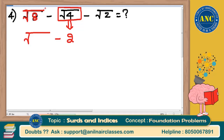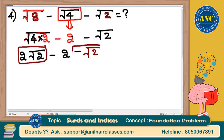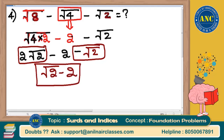8 can be written as 4 into 2. We choose 4 into 2 because 4 is a perfect square — square root of 4 can be taken outside as 2, and root 2 remains inside. So square root of 8 = 2 root 2. The expression becomes 2 root 2 minus 2 minus root 2. Simplifying: 2 root 2 minus root 2 = root 2, so the final answer is root 2 minus 2.